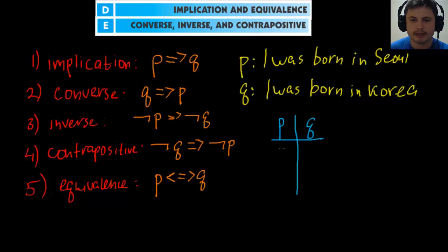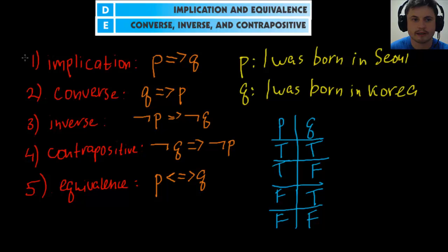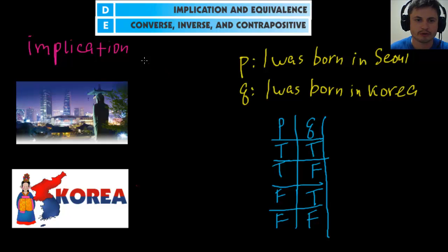The four possibilities are: (1) yes I was born in Seoul, yes I was born in Korea; (2) yes I was born in Seoul, no I was not born in Korea; (3) no I was not born in Seoul, but I was born in Korea; (4) no I was not born in Seoul and not born in Korea.